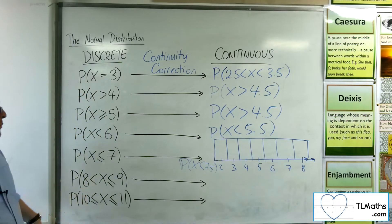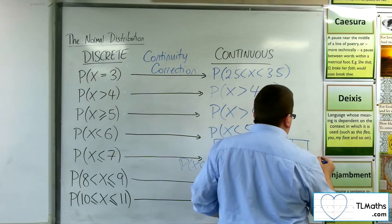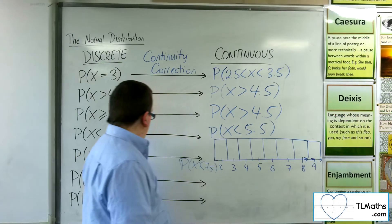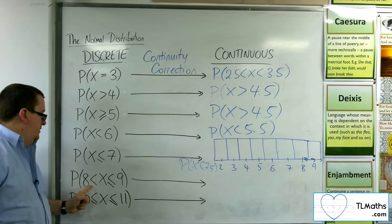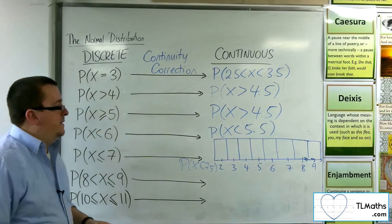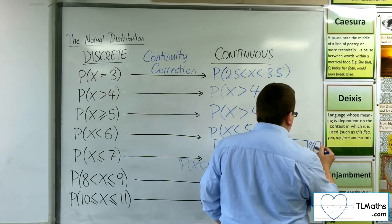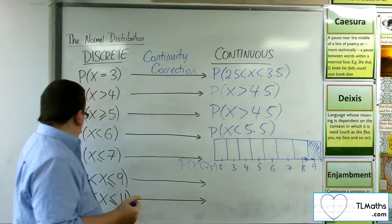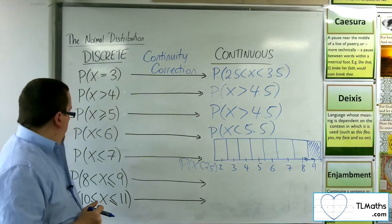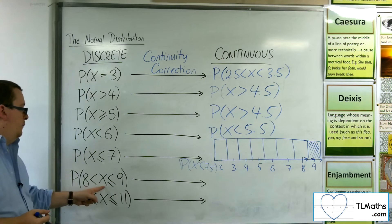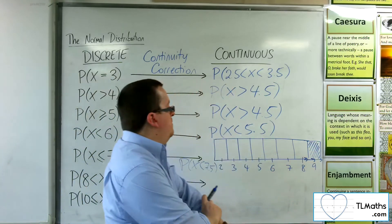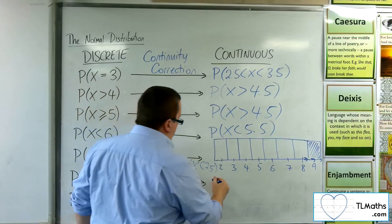Now how about this one? Let's draw 9. So X is greater than 8 but less than or equal to 9. So I want 9. In binomial terms, that would just be talking about X equals 9. And so here, it's just talking about from 8.5 up to 9.5.